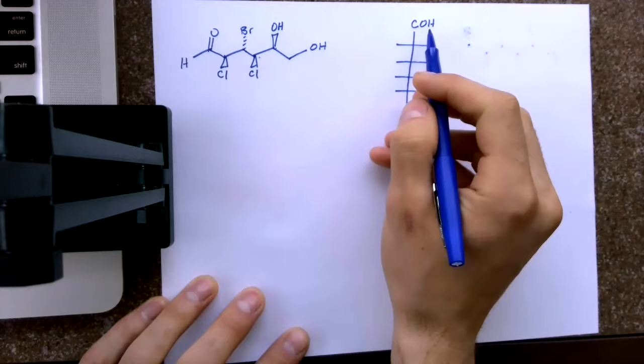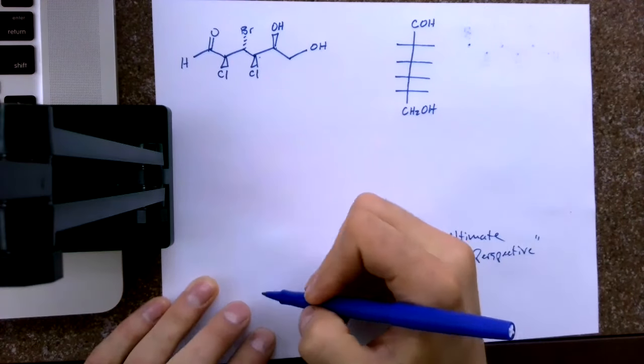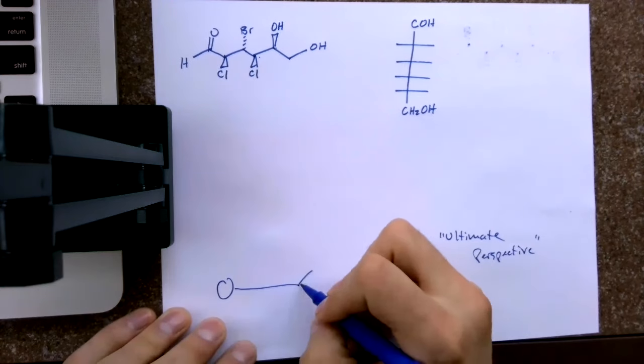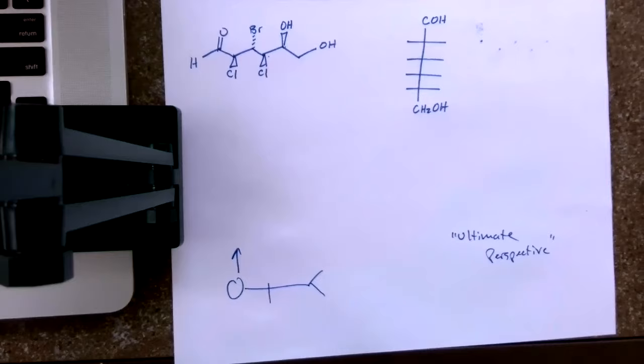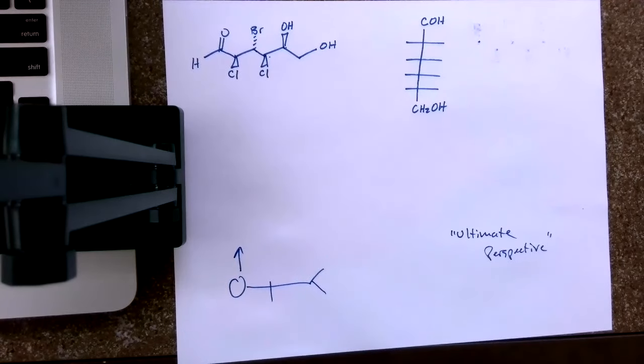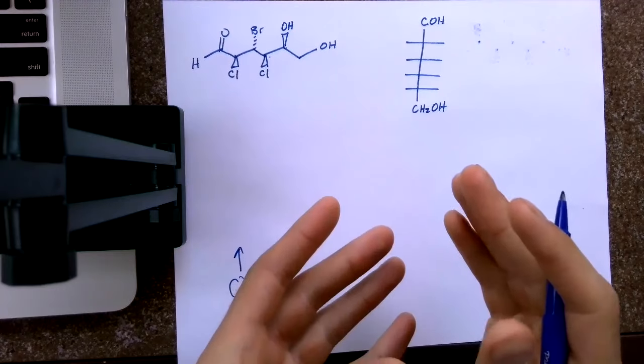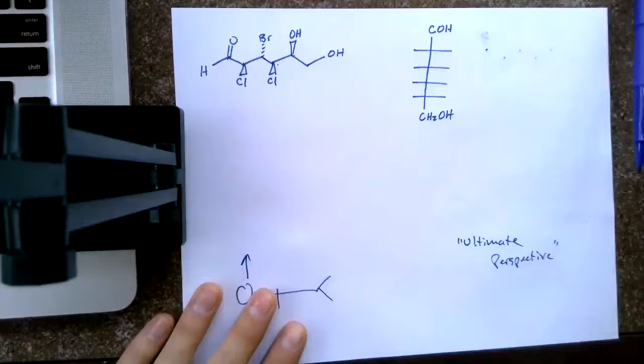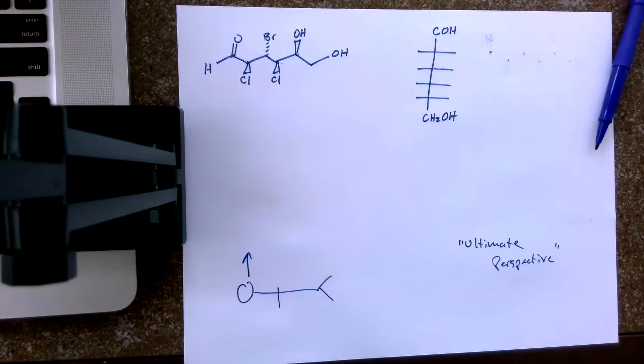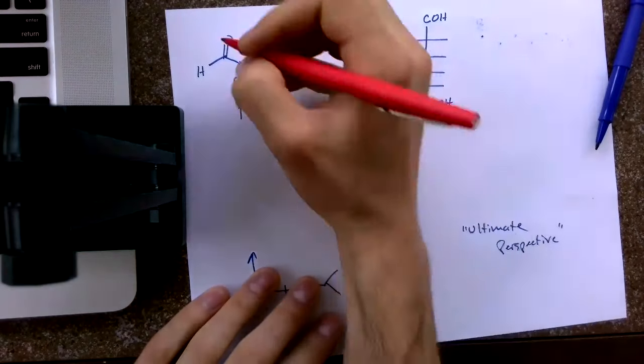And by denoting the COH, that is this group, my ultimate perspective is this angle. But a Fischer projection and how I draw Fischer projections is a series of tiny perspectives. So we have an ultimate perspective, but when I'm looking and drawing and manipulating this Fischer projection, I have tiny perspectives on each point.